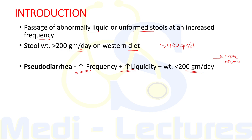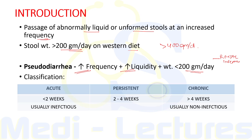The classification of diarrhea is based on duration. It is acute when present for less than two weeks, chronic when present for more than four weeks, and persistent when it lasts two to four weeks. Acute diarrhea is usually due to infectious causes, chronic diarrhea usually due to non-infectious causes, while persistent diarrhea is due to infectious causes with delayed recovery.